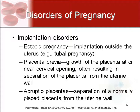There is also placenta previa, which is when the growth of the placenta is at or near the cervical opening. This often results in separation of the placenta from the uterine wall and can be very dangerous for the mom. And there is abruptio placenta, which is the separation of the normal placenta from the uterine wall.